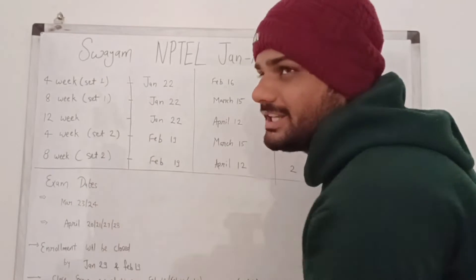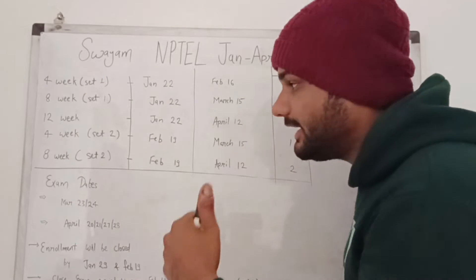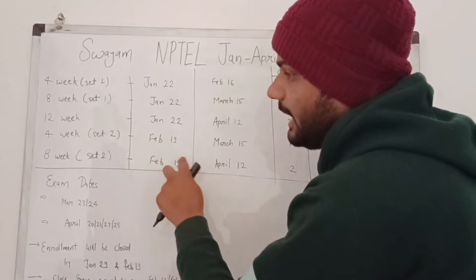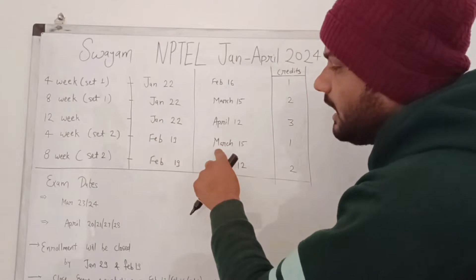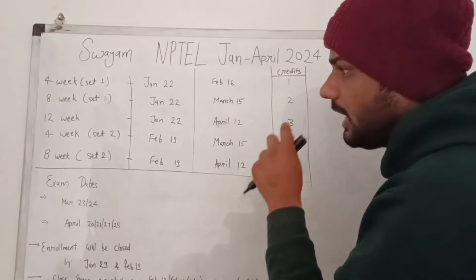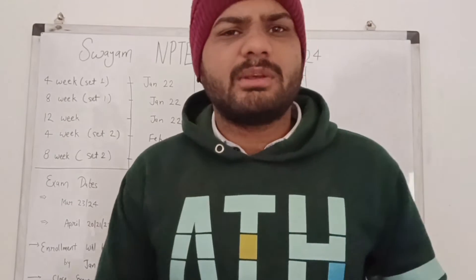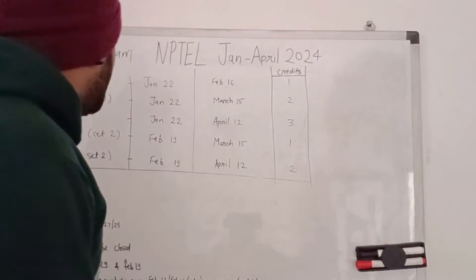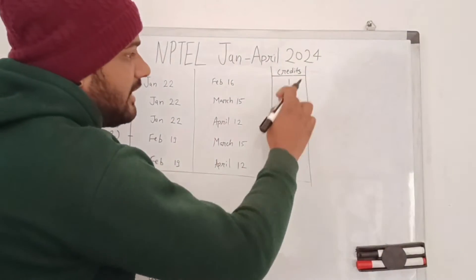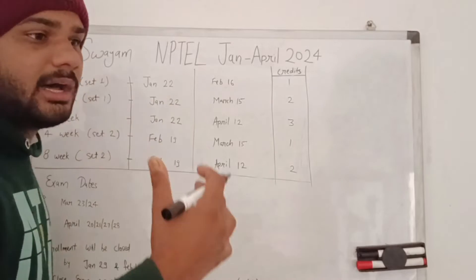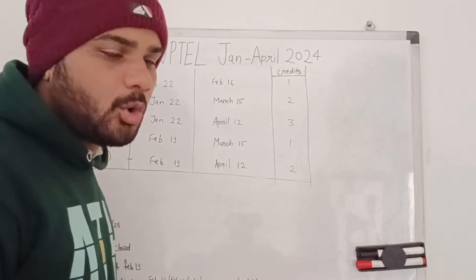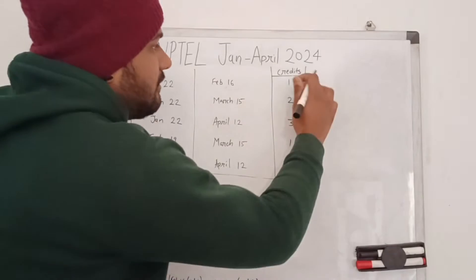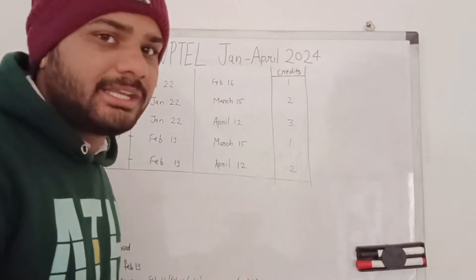For Set 2, those who have not applied for Set 1 can also apply. That course will commence from February 19 and will end in March 15 and April 12. A very important thing is that you will get different credits according to the timeline of the particular course. For example, if you apply for the four-week course you will get one credit.